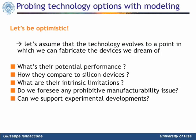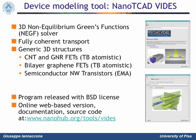What is the role of modeling in this context? Here is how we see it. First, we need to be optimistic — we need to assume that the clever scientists working on device fabrication will improve the technology to a point where they are able to fabricate a device we now only dream of. After that, we need to ask some relevant questions: What's their performance compared to silicon devices? What are their intrinsic limitations? Do we see any prohibitive manufacturability issue? And finally, can we support experimental developments?